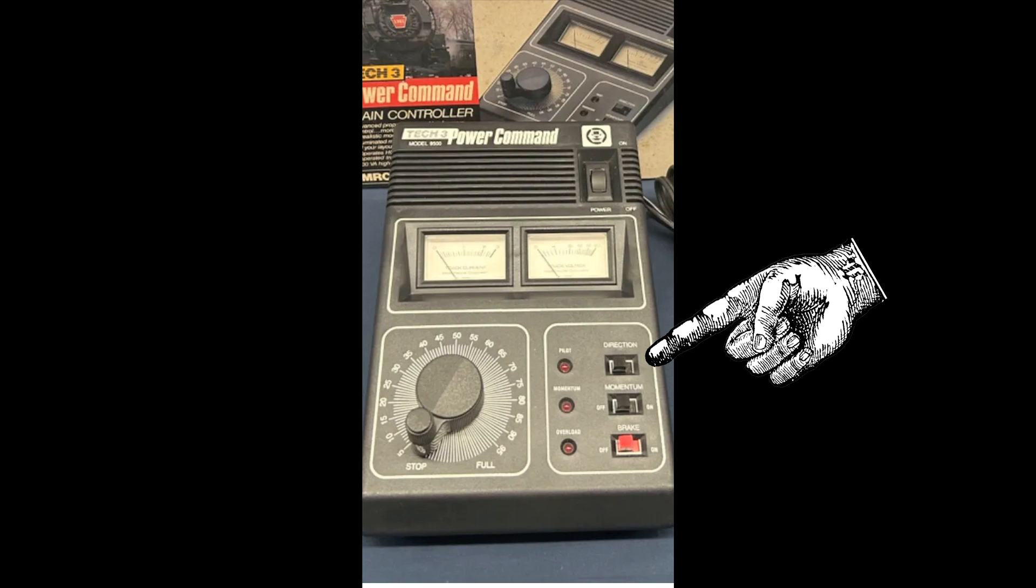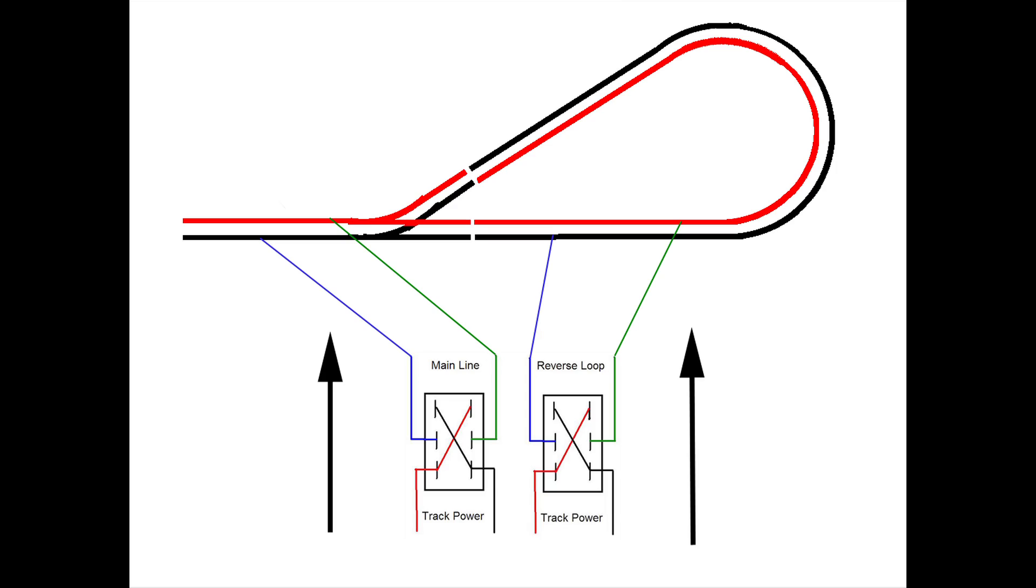And the easy way to do reversing loops is actually you have three complete reversing switches, the one on the transformer, which still will change the direction of the train and two other ones, one that controls all of the railroad and one that controls the isolated section. And then by manipulating those two double pole, double throw switches, you can align the polarity for whichever end of that loop you need to, to pull the train into the loop and back out of the loop without shorting everything out.